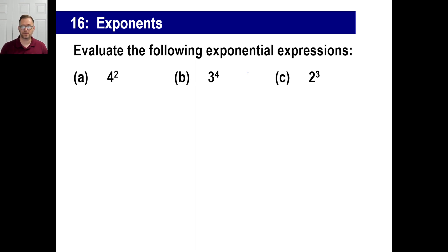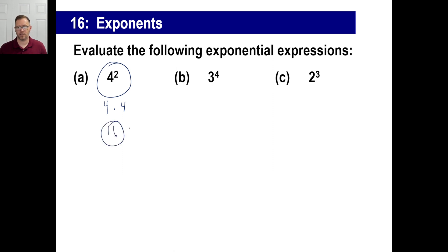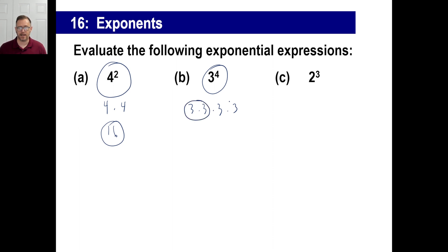Let's evaluate these exponential expressions. The answer to four to the second power is not eight — don't get confused. This does not mean four times two. This means four used as a factor two times, and four times four is 16. Three to the fourth power is not the same thing as three times four. This means using three as a factor four times. You can bunch these up — three times three is nine, and nine times nine is 81. So three to the fourth power is 81.